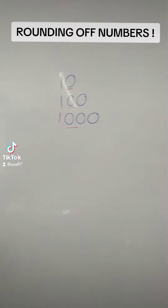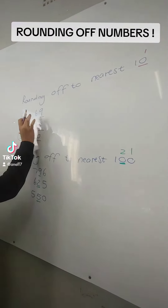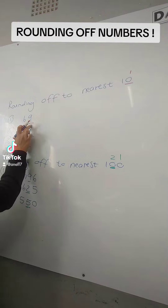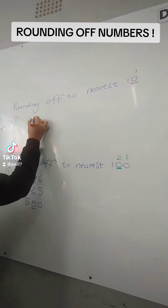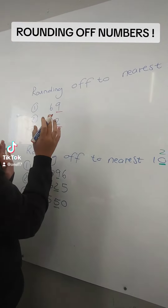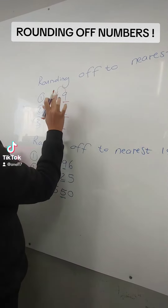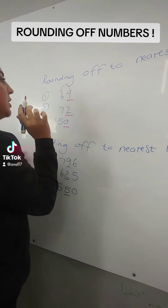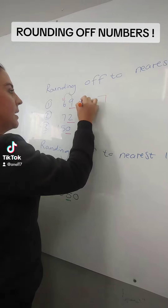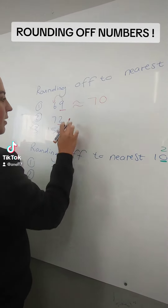So here, we have to round off to the nearest ten. If we look at the 69, we look at the 9. If a number is a 9, it's bigger than a 5, so it's going to change my next number. This 9 is bigger than 5, so it's going to change my 6 to a 7, and after that it becomes a 0.